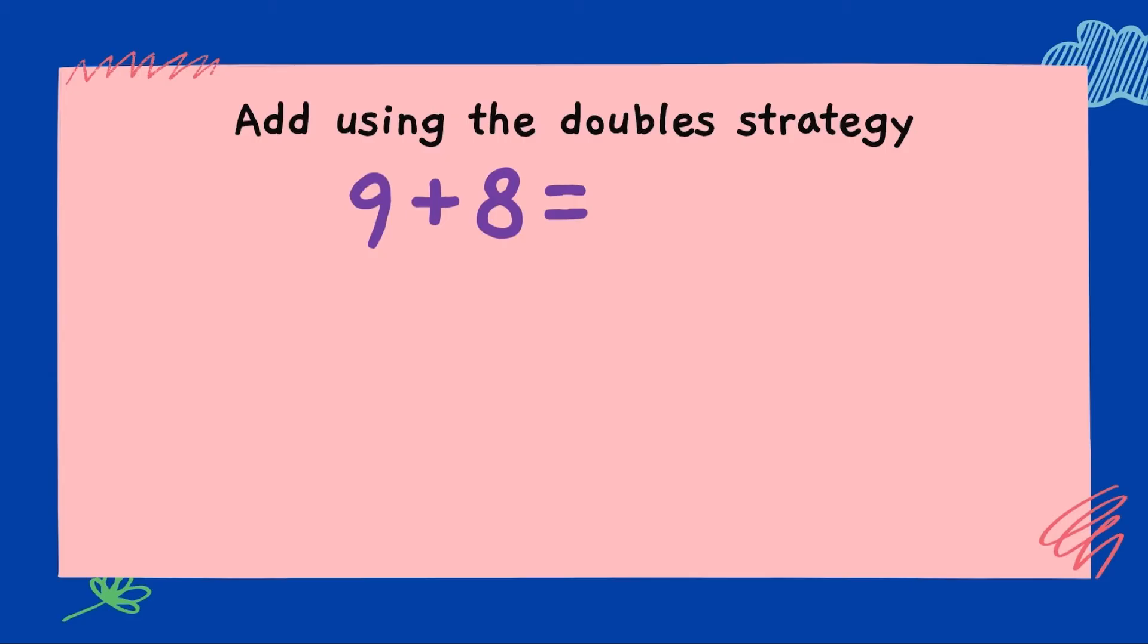Next one. 9 plus 8. Which one is the smaller number? The 8. So, we will split the bigger number, which is 9. We'll split it to 8 and 1. 8 plus 1 gives you 9. Now, using the double strategy, what's 8 plus 8? 16. 16 plus 1? 17.